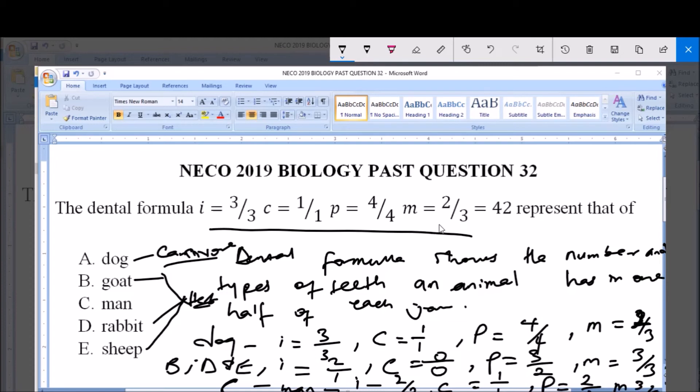From this, you will see that the animal with this dental formula is option A, dog. Dog has 3 incisors on one half of the upper jaw and likewise on one half of the lower jaw; 1 canine on one half of the upper jaw and the same with one half of the lower jaw; 4 premolars on one half of the upper jaw and likewise one half of the lower jaw; and then 2 molars in one half of the upper jaw, 3 molars in one half of the lower jaw.